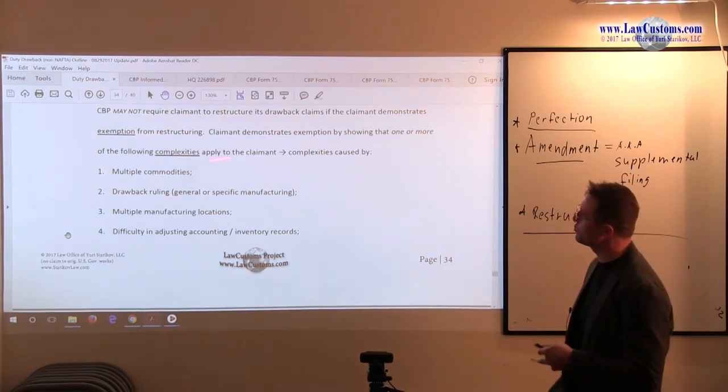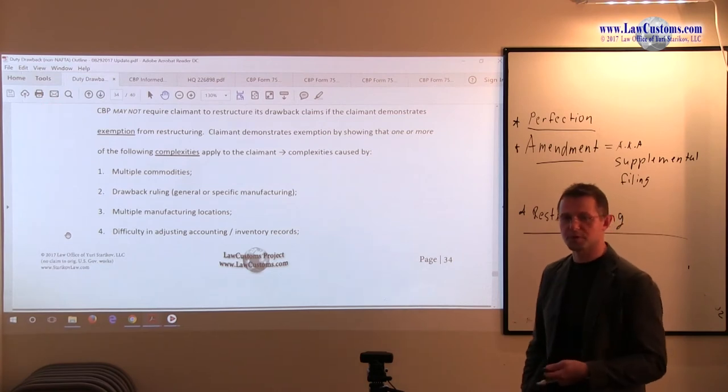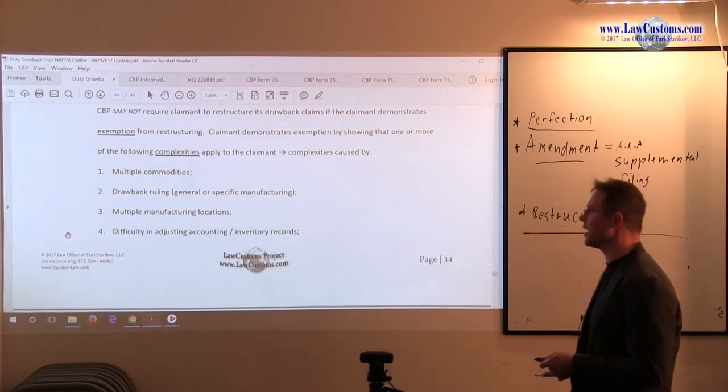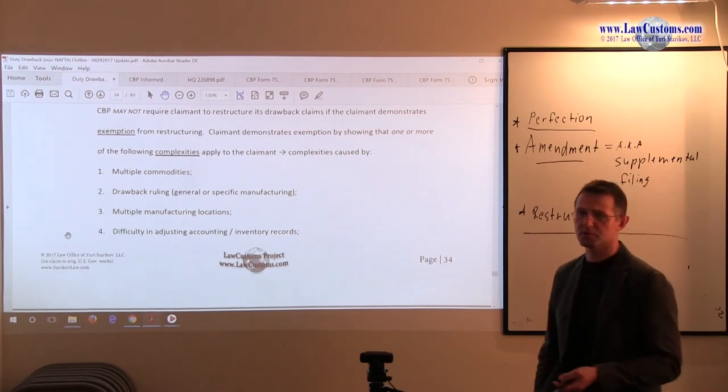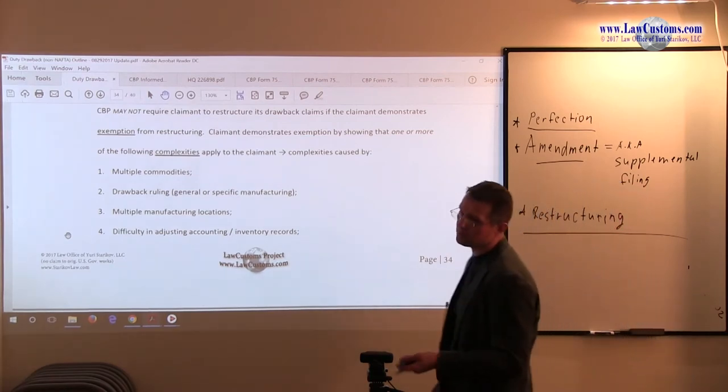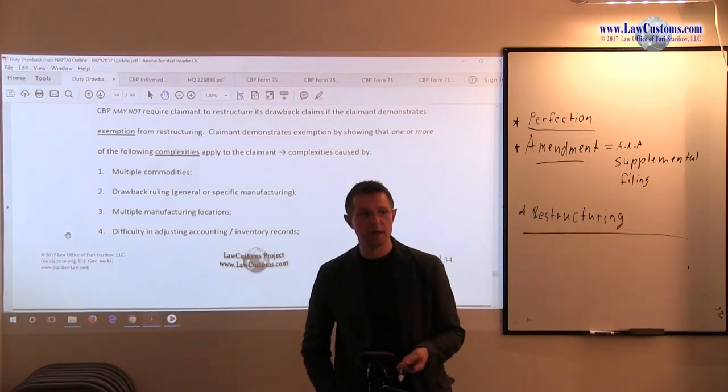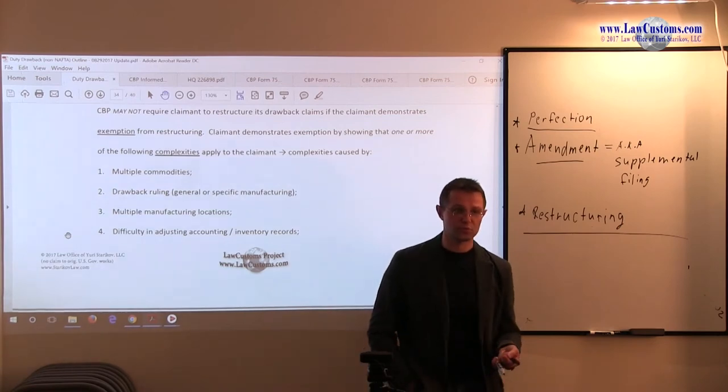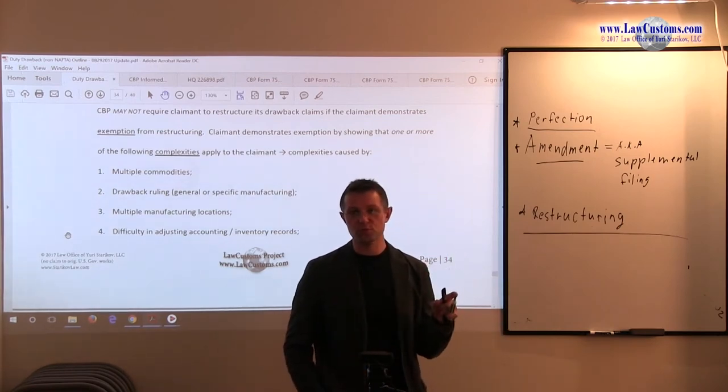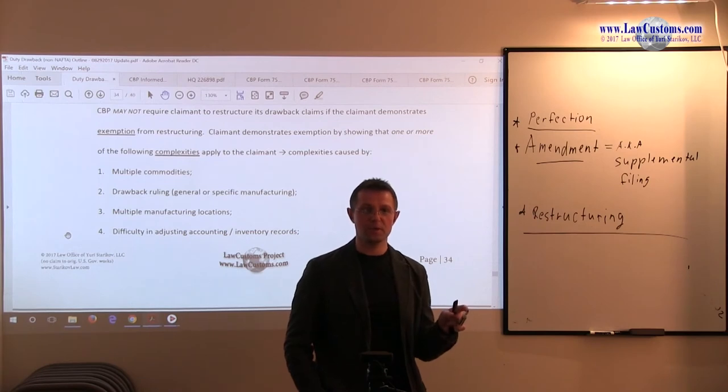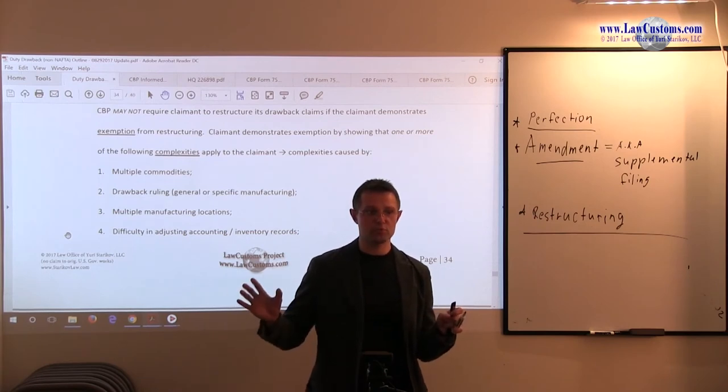This would be the reason for you to come to customs and say, no customs, I qualify for an exemption from claim restructuring because I either have multiple commodities. I import food and computers at the same time and both of them are subject to drawback, but I'd rather deal with food products under a separate drawback claim as opposed to the computer products.